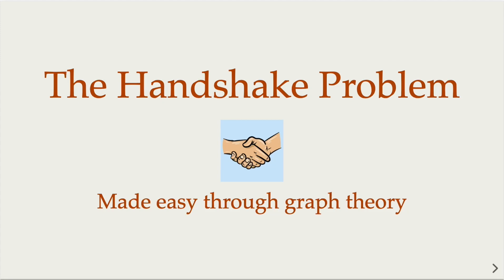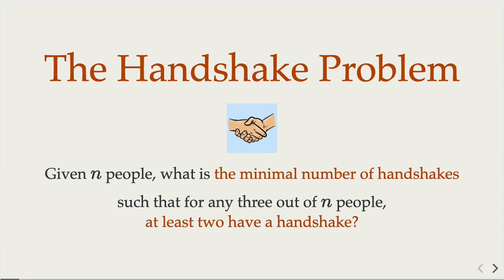Today we're going to look at a handshake problem — an advanced version of it. We're going to use graph theory to solve this problem. The question is: if you have n people, what is the minimum number of handshakes such that when you pick any three out of the n people, there must exist one handshake between the two people? This requires probably a little bit more thinking than the typical handshake problem you have seen.